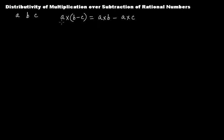In this case, first we find the subtraction b minus c. Whatever result comes, we multiply that result with a. The value found using this method is equal to a times b minus a times c — first multiply a with b, then subtract a times c. This is what distributivity of multiplication over subtraction of rational numbers means.